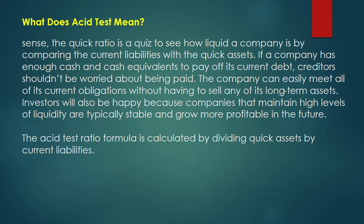So what does the acid-test ratio really mean? The quick ratio is a measure of how liquid a company is by comparing the current liabilities with the quick assets. If a company has enough cash and cash equivalents to pay off its current debt, creditors should not be worried about being paid. The company can easily meet all its current obligations without having to sell any of its long-term assets.